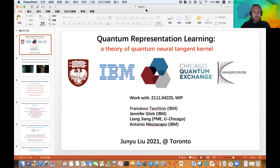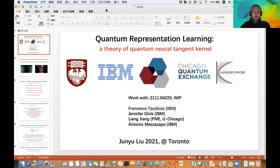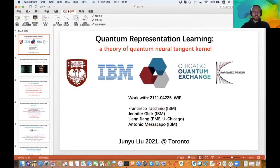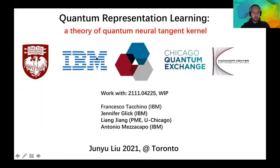Junior is a theoretical physicist currently working at University of Chicago and with IBM. He is interested in theoretical physics and its relation to computation, including random matrix theories, machine learning, optimization, quantum computing, and commercial value of modern computing technologies. Today we'll hear his talk about quantum representational learning. Thank you for coming, and the floor is yours.